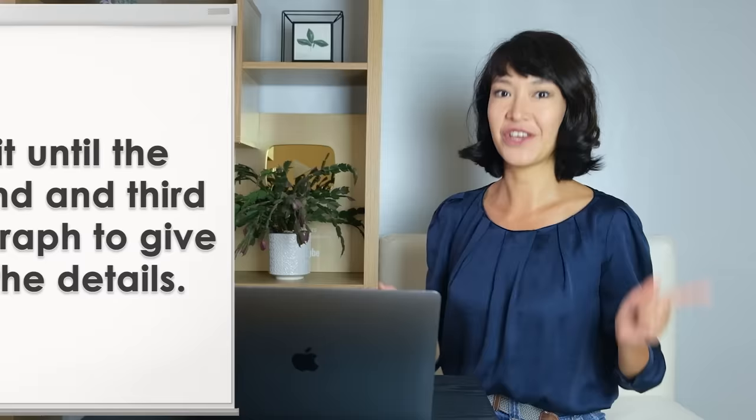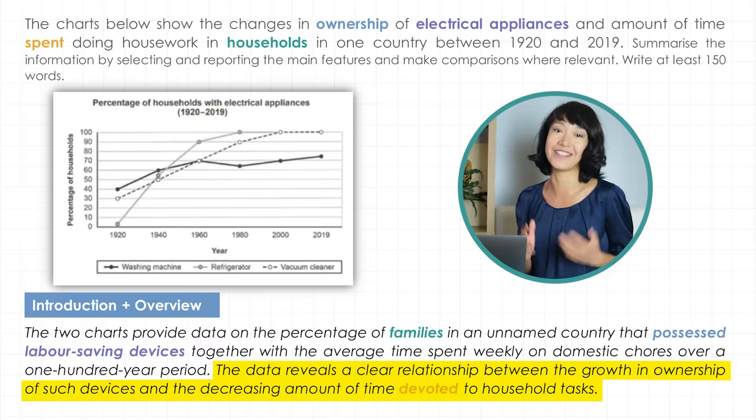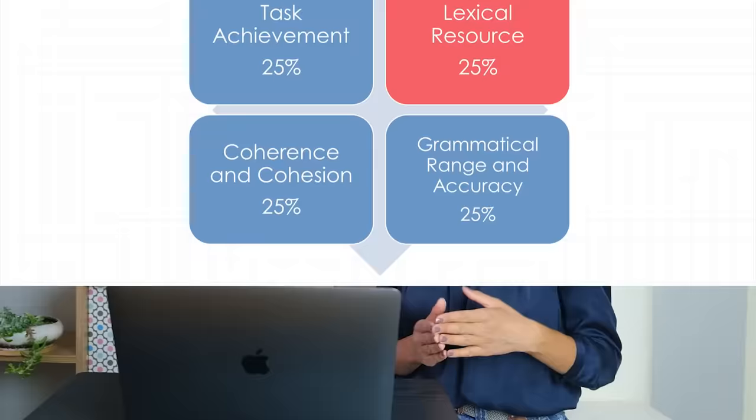The third point is the overview — sentence 2. It shows that you have understood what the graphic data is essentially all about. Let's move on to another task descriptor and look at lexical resource, or your vocabulary.